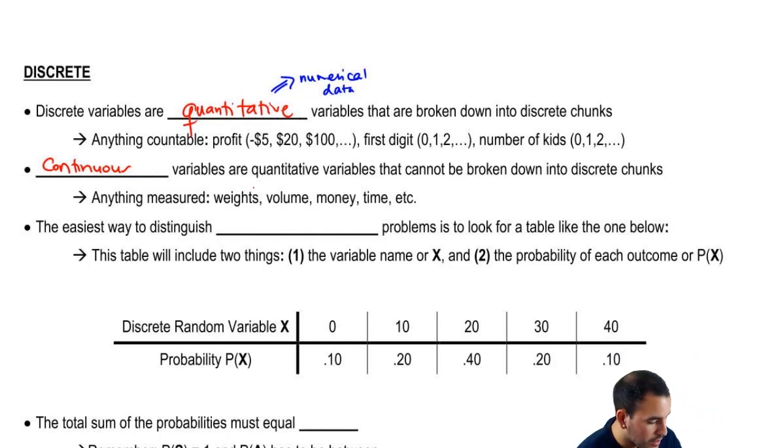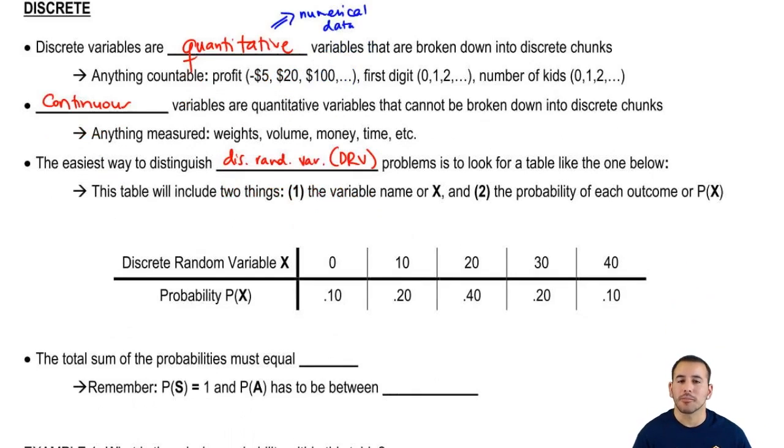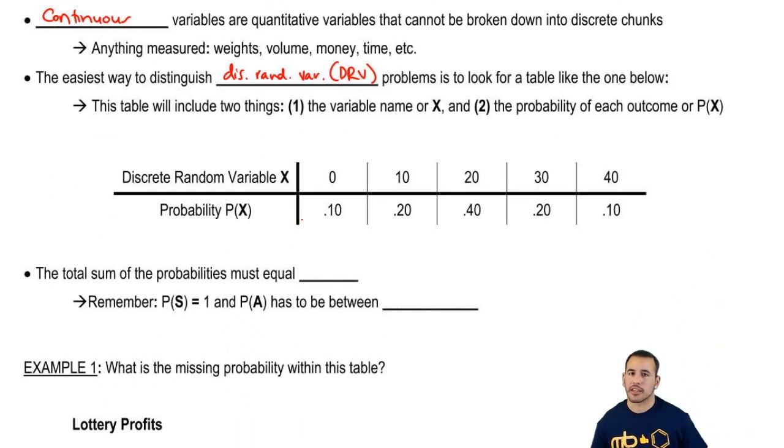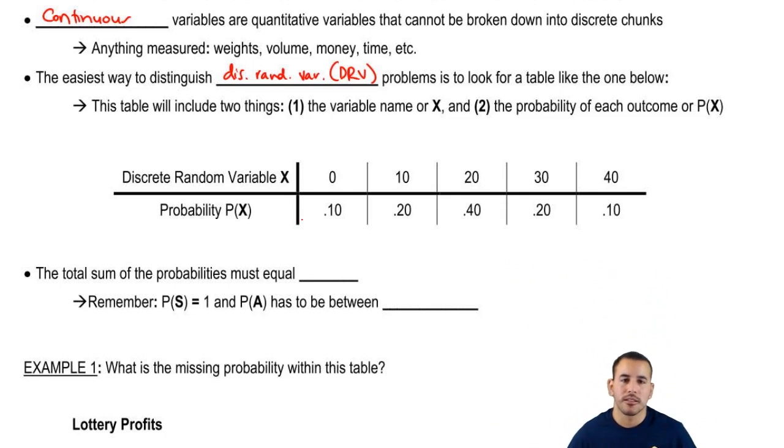So now, the easiest way to distinguish discrete random variable problems, I'm going to abbreviate this from here on out as DRV, is to look for a table like the one below. So this table will include two things: the variable name or just X, and also the probability associated with each of those outcomes, so P(X). So here we can see an example. Discrete random variable, or it could have the title of a variable, and then we go across and we have different values for that variable. We have 0, 10, 20, 30, 40. And then the probability associated with getting any of those outcomes. So 0.10, aka 10%. Remember, in statistics we use decimals, not percentages. So the next one is 20, 40%, 20%, and 10%.